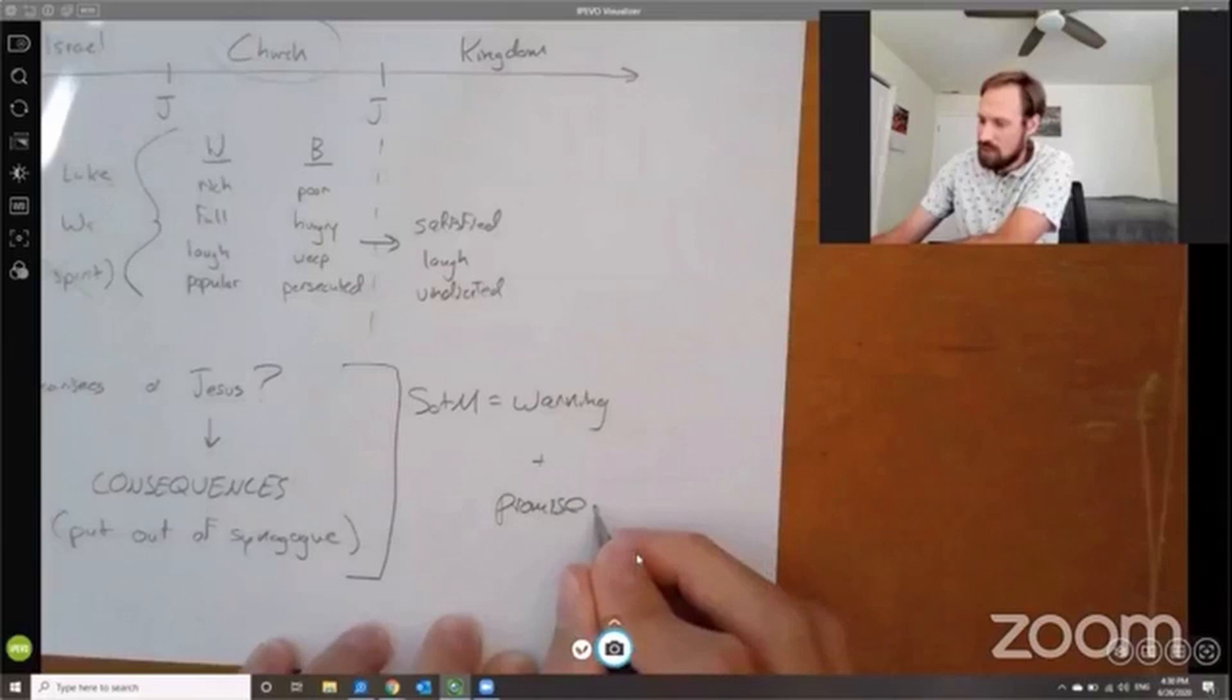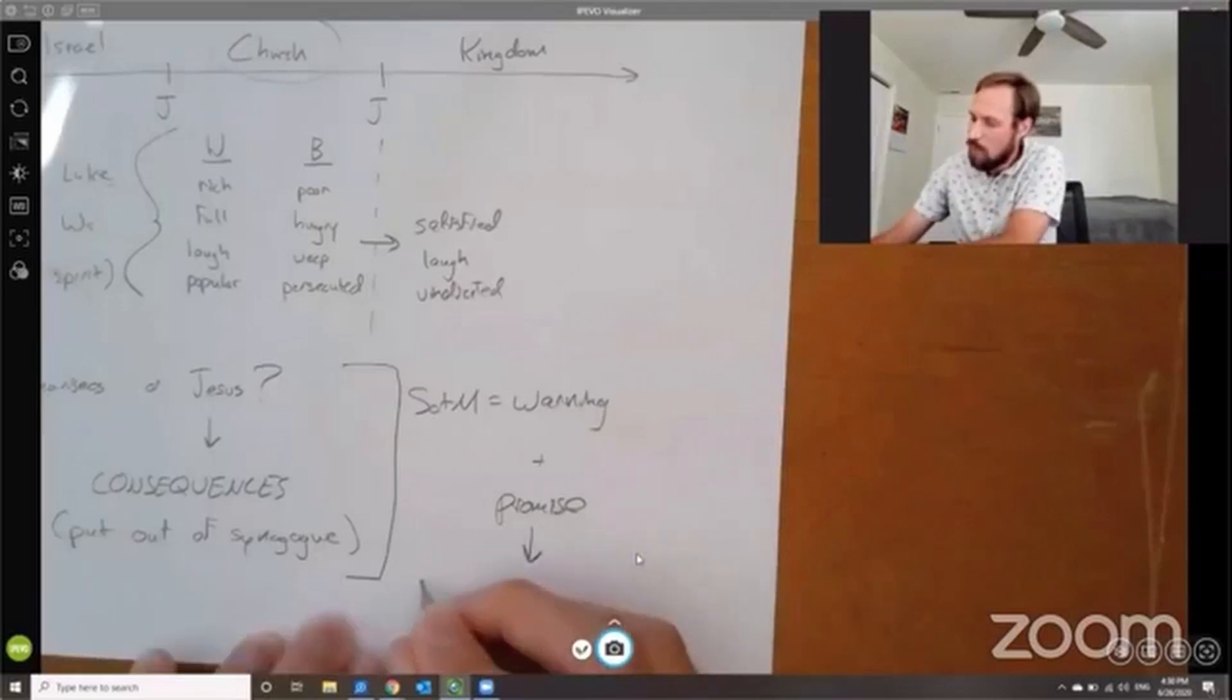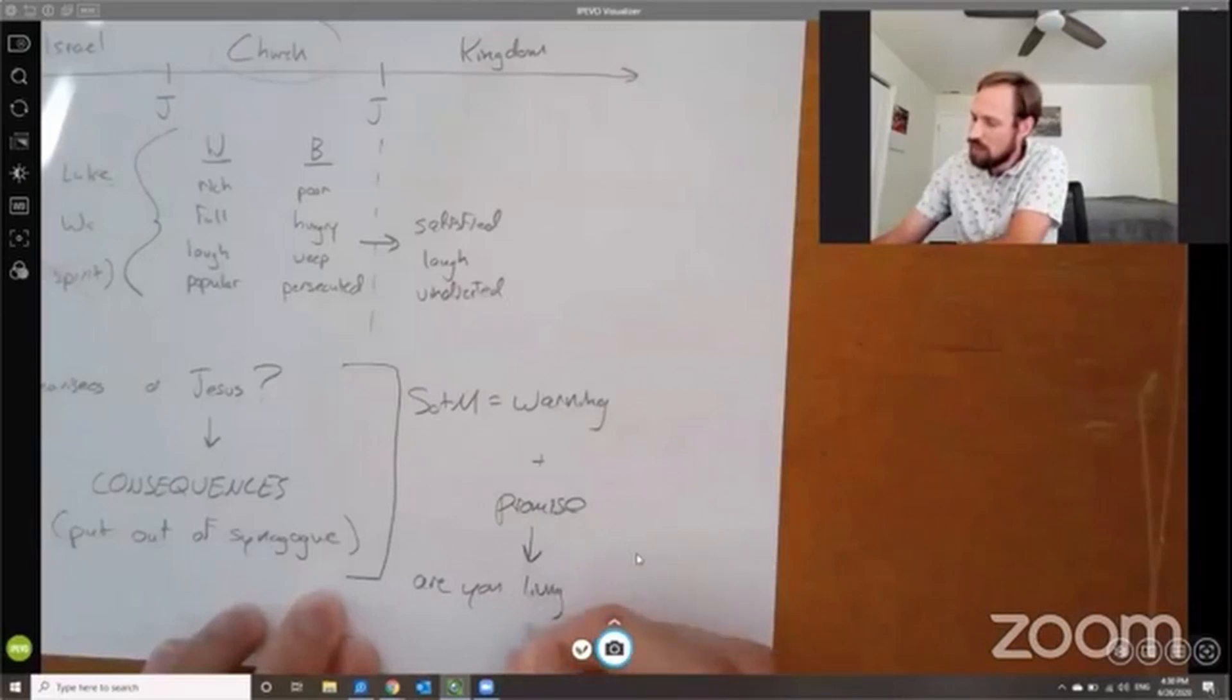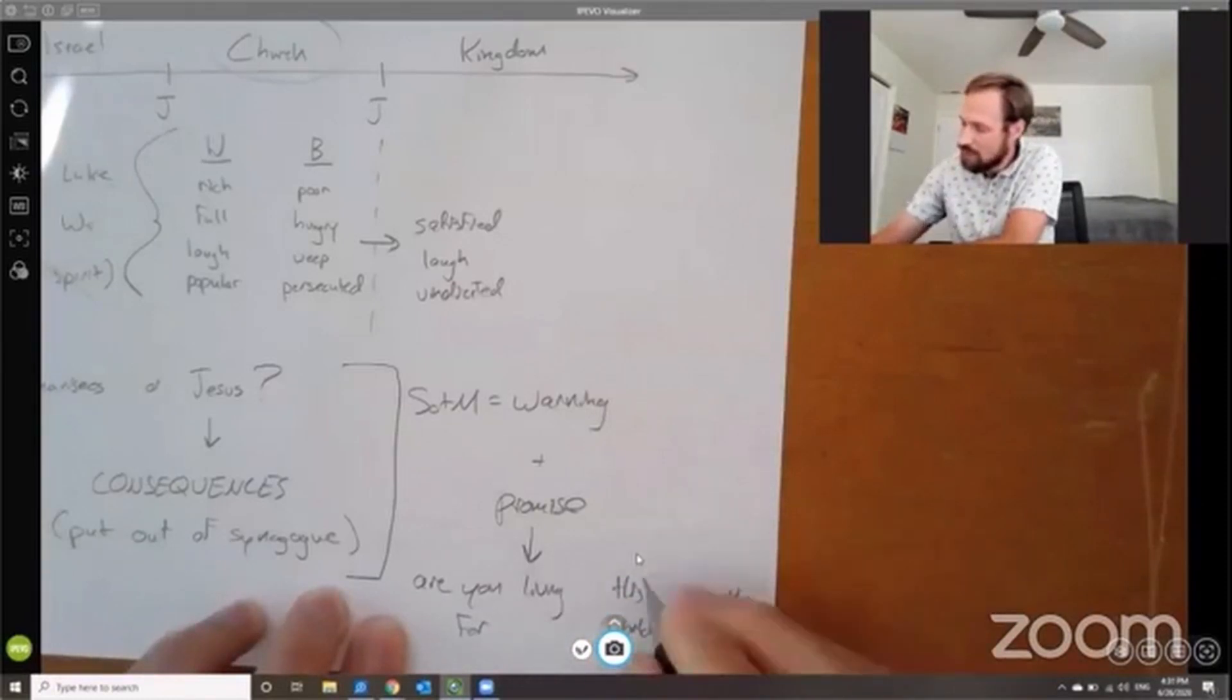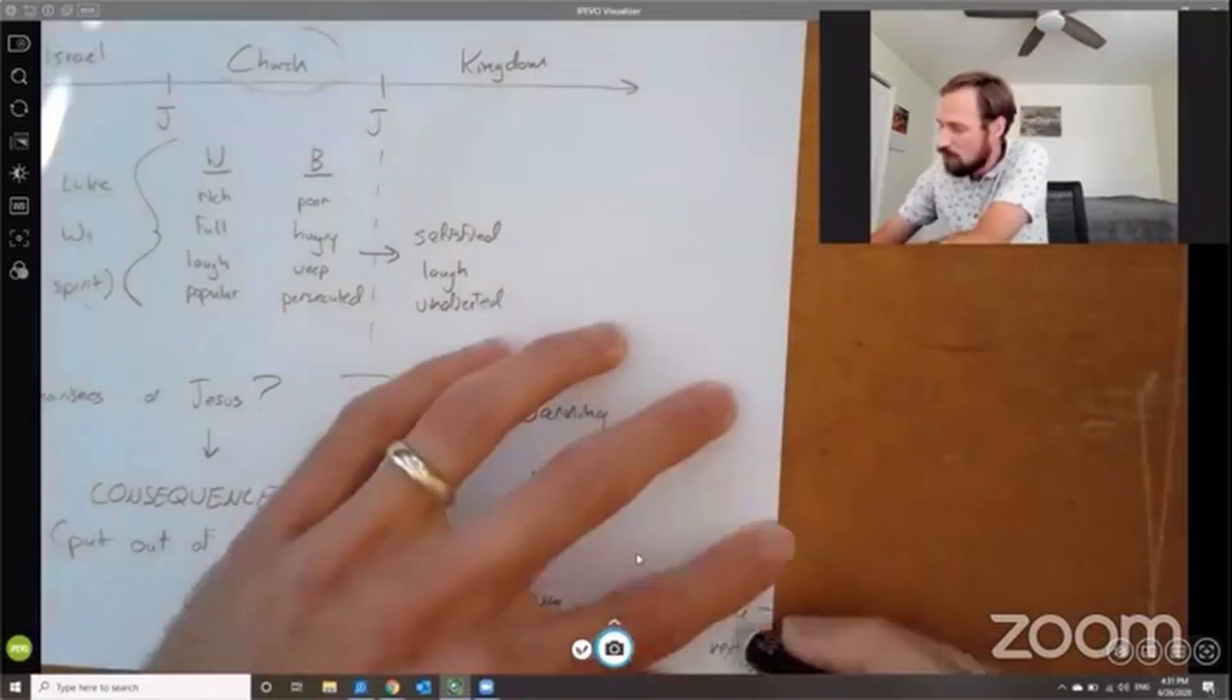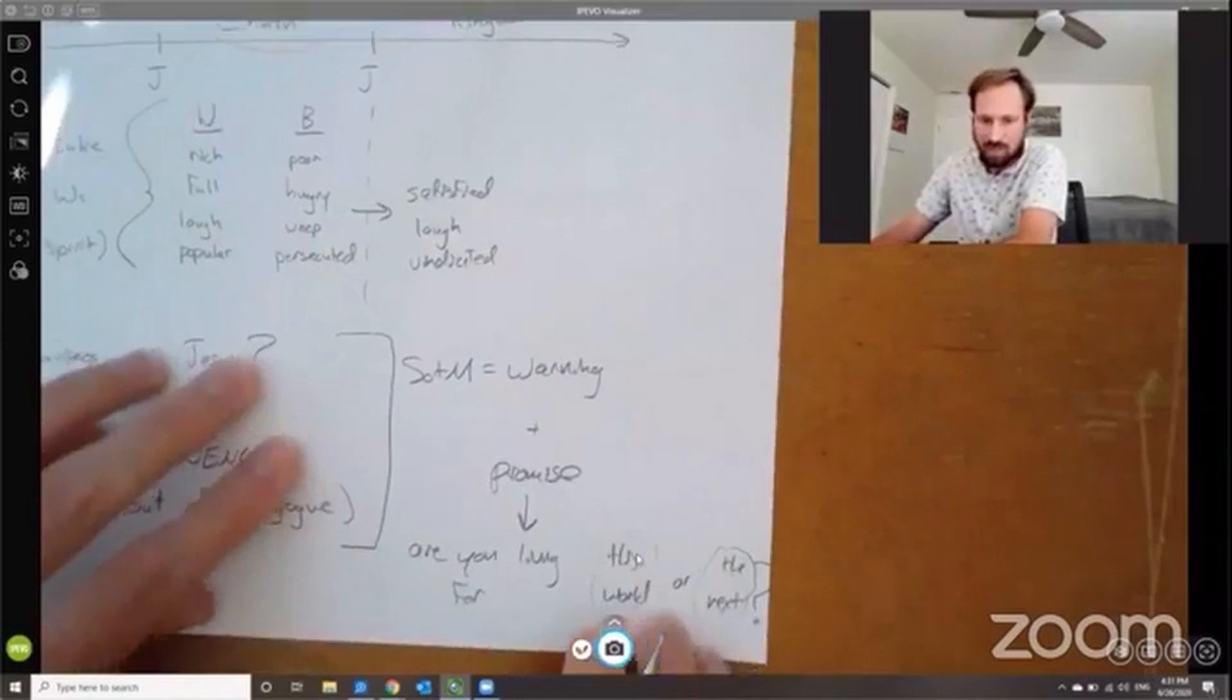So what, what Jesus is promising here in the Beatitudes, in the Sermon on the Mount, it's really the answer to this question. Where's the best space to write this? Are you living for this world? Or are you living for the next? It's supposed to be a question mark. Are you living for this world? Or are you living for the next world?